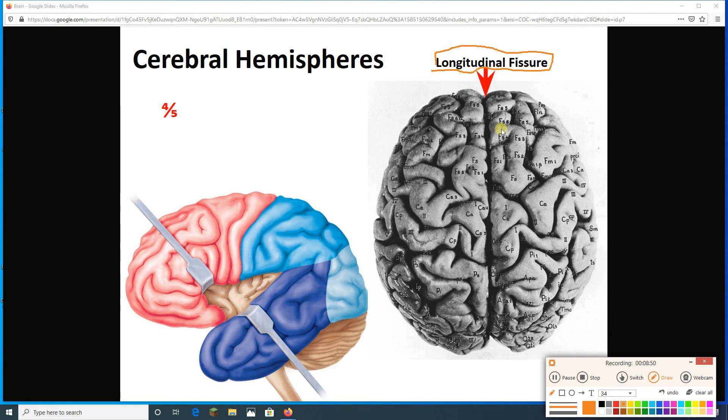A fissure is a deep crack. And the longitudinal fissure is this guy. Let me see if I can draw all the way through him, sort of-ish. There he is. That's the longitudinal fissure. Separates the cerebrum into two hemispheres. We see one of the hemispheres, the left hemisphere, over here as well.